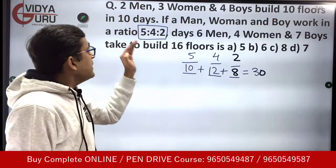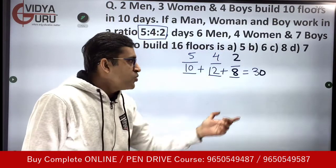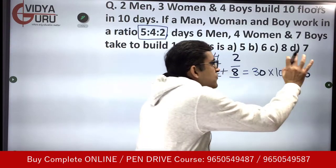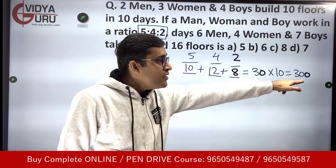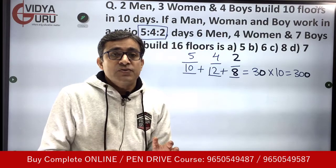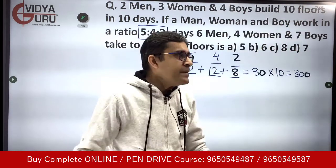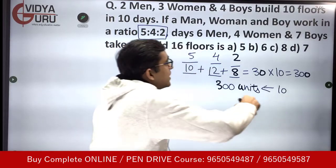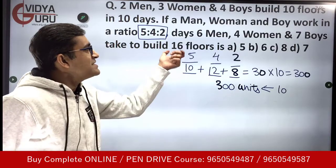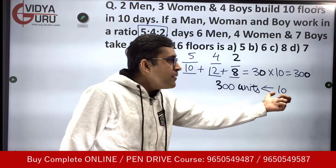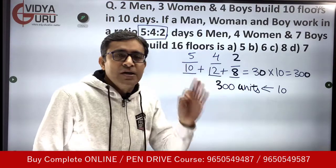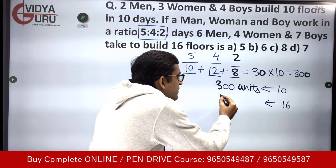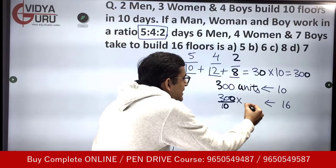They complete 10 floors in 10 days. So in 10 days they perform 30 units per day × 10 days = 300 units of work. This 300 units is the work required for building 10 floors. Now we have to build 16 floors. Using simple unitary method: work required = 300 ÷ 10 × 16 = 480 units.